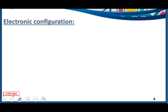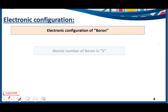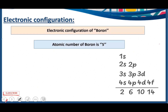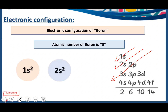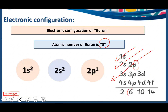Electronic configuration of boron — atomic number 5. We cut 1s, then 2s, then 2p. Write: 1s2, 2s2 — that accounts for 4 electrons. But we need to accommodate 5 electrons, so we need another energy level and take help of 2p. We are just left with one more electron, so 2p1. The configuration is 1s2, 2s2, 2p1: 2+2=4, 4+1=5 electrons.